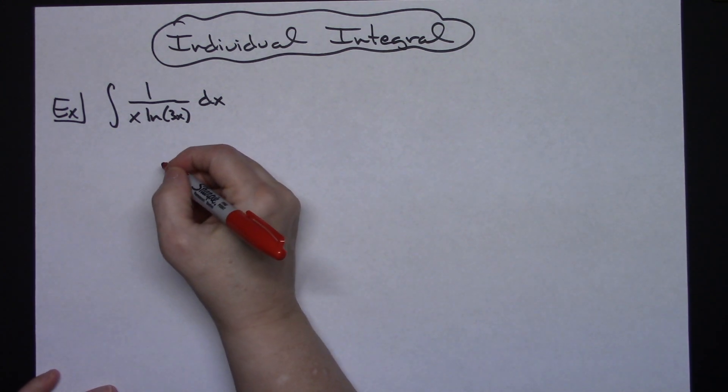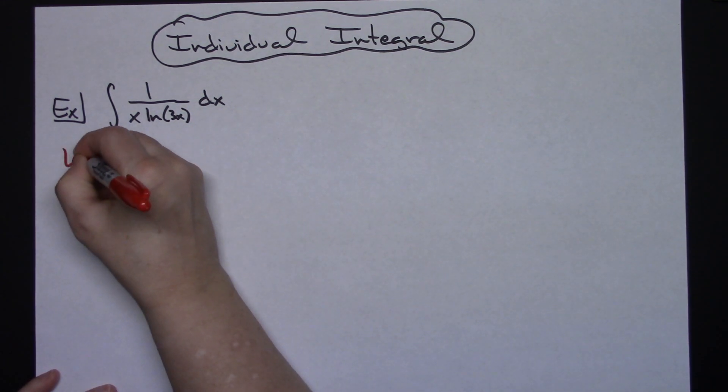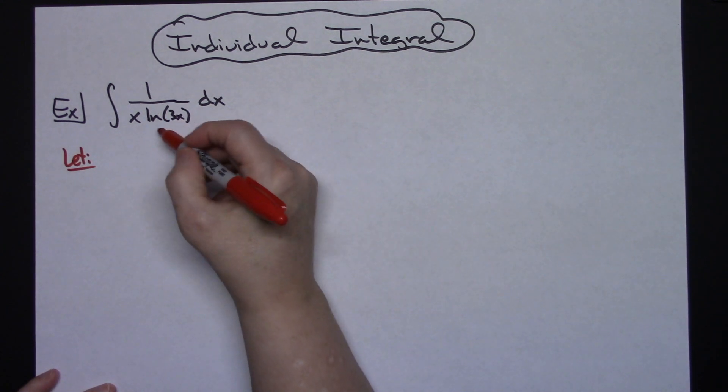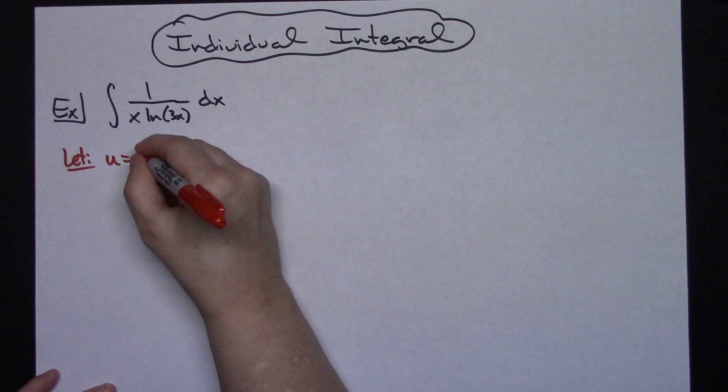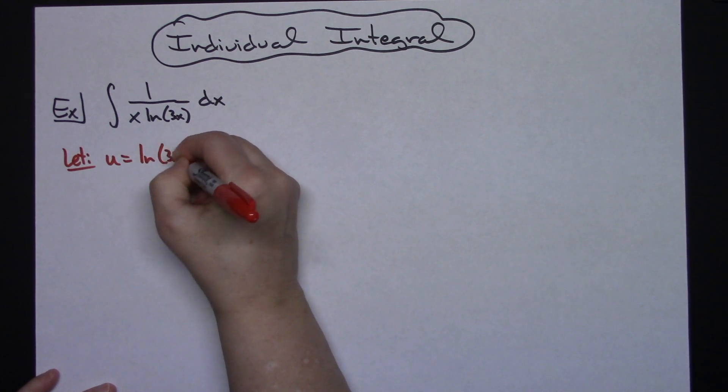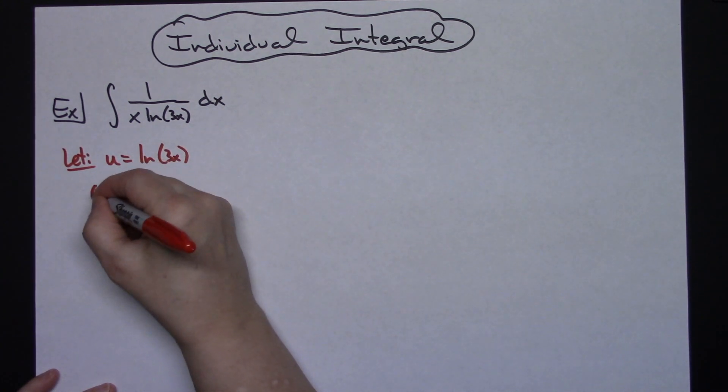I'm going to start by letting my u be the entire natural log of 3x, so u is equal to natural log of 3x. And I need to take the derivative of both sides.